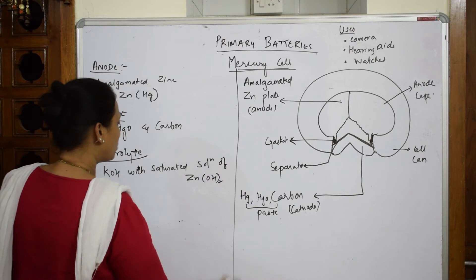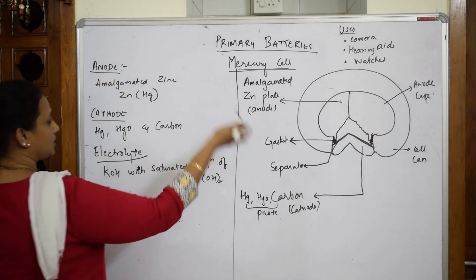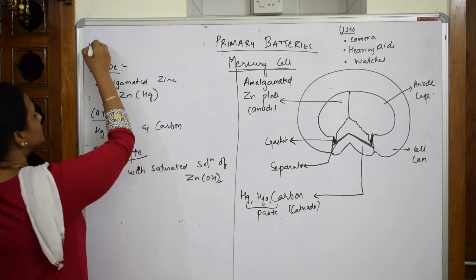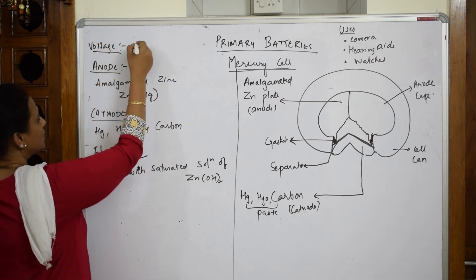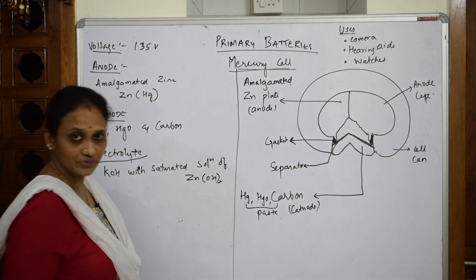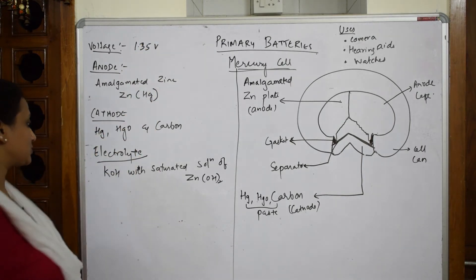Let's see the voltage which the mercury cell is going to produce. I'll write it here. Voltage which the mercury cell is going to use is 1.35 volts. Now let's write the cell reactions.